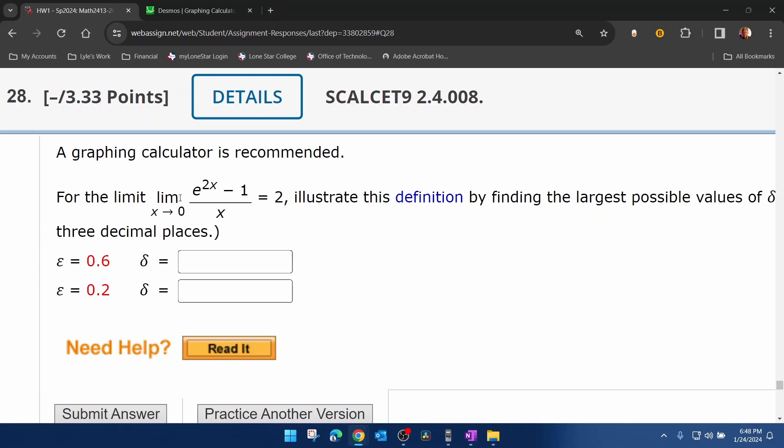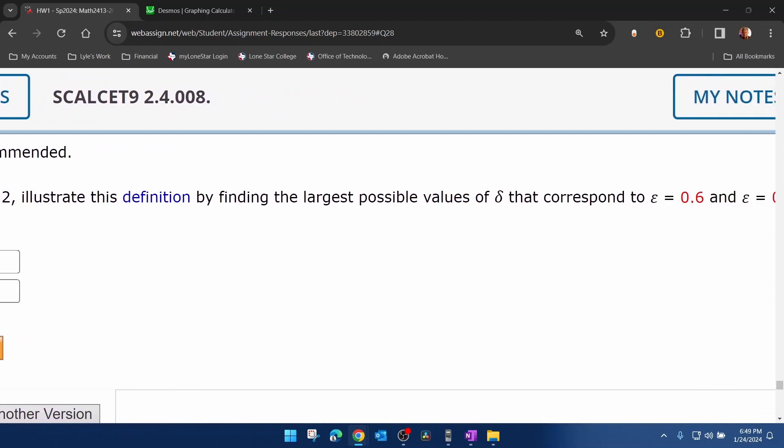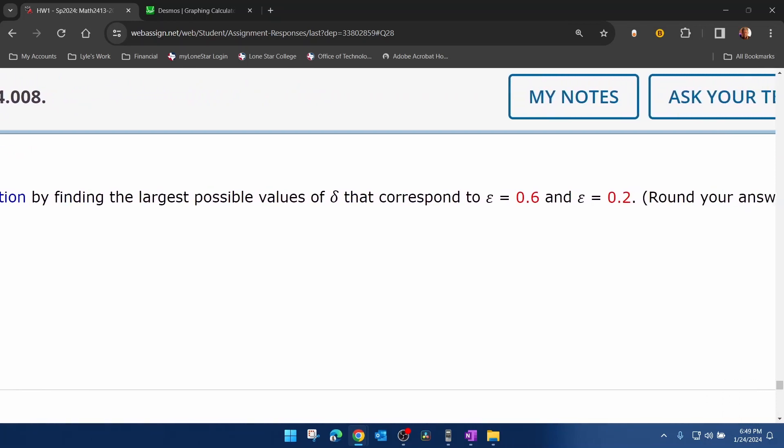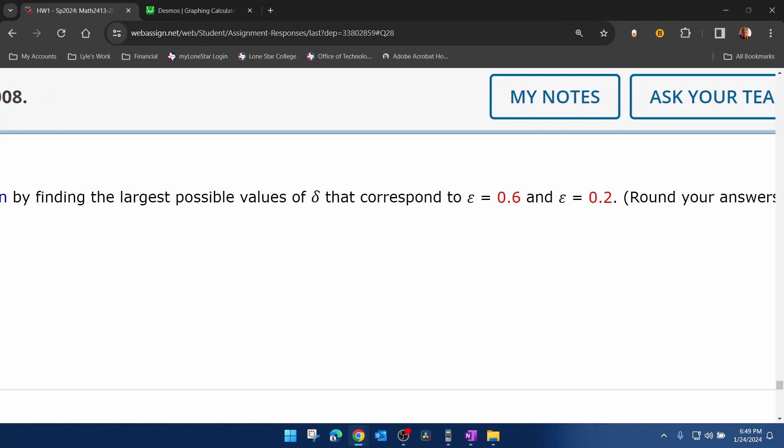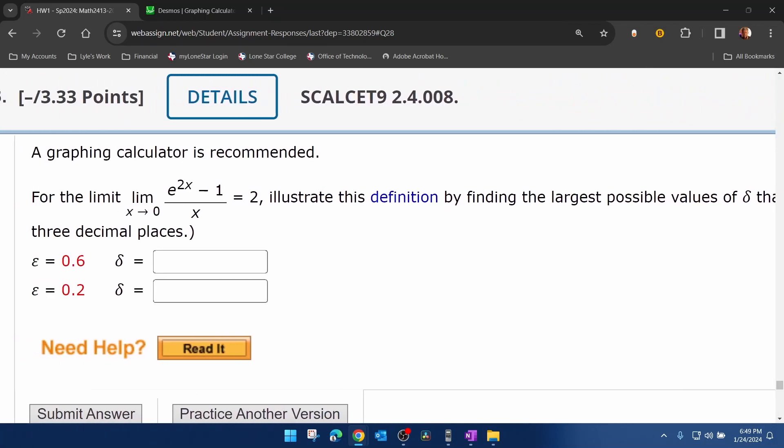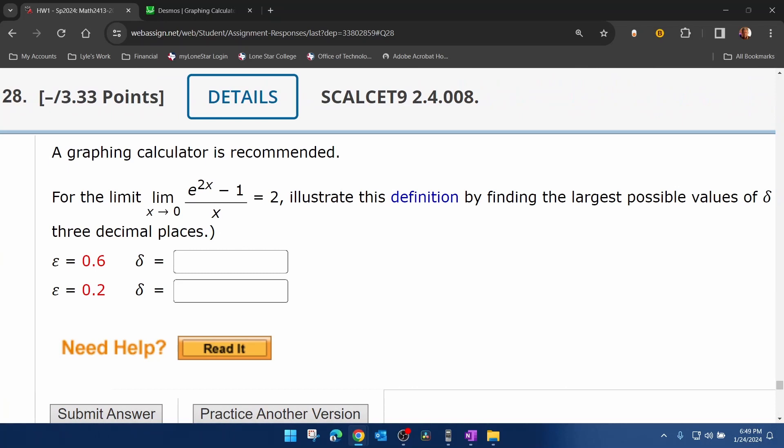It says for the limit as x approaches 0 of e to the 2x minus 1 all over x equals 2. Illustrate this definition. Now what they mean by definition is that this equation is true by finding the largest possible values of delta that correspond to epsilon equal 0.6 and 0.2, and then it says round your answers to three decimal places.